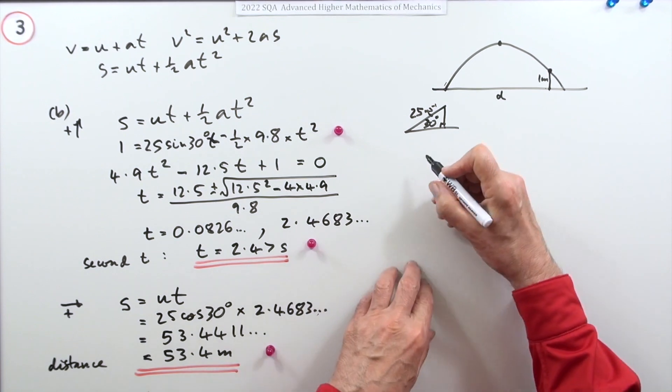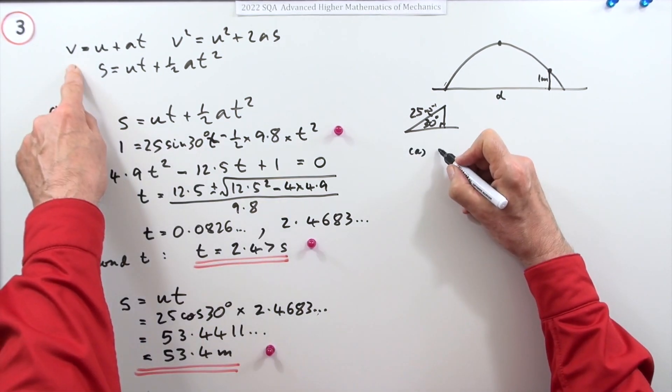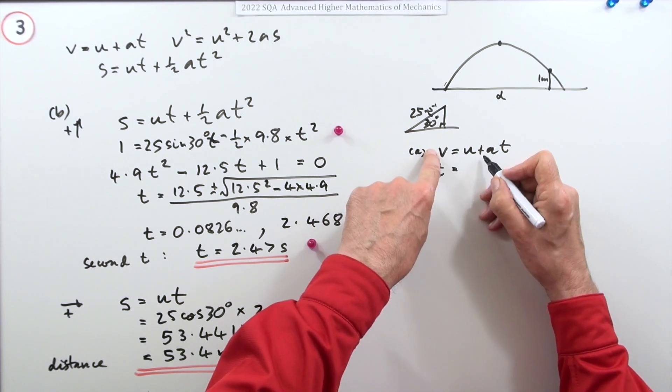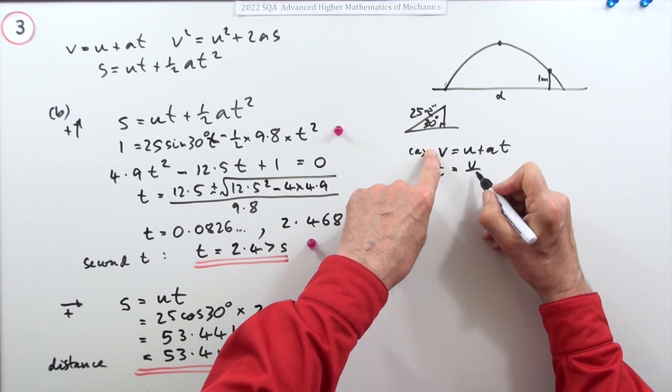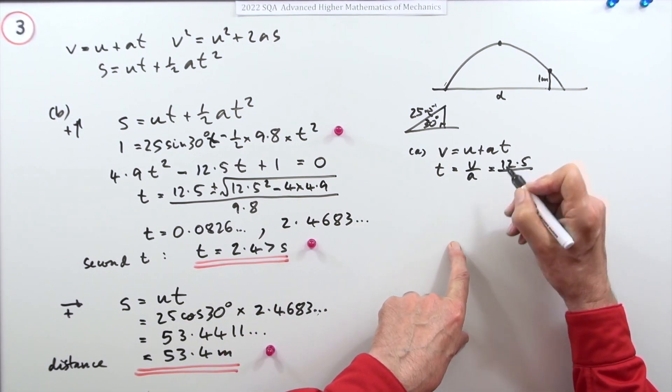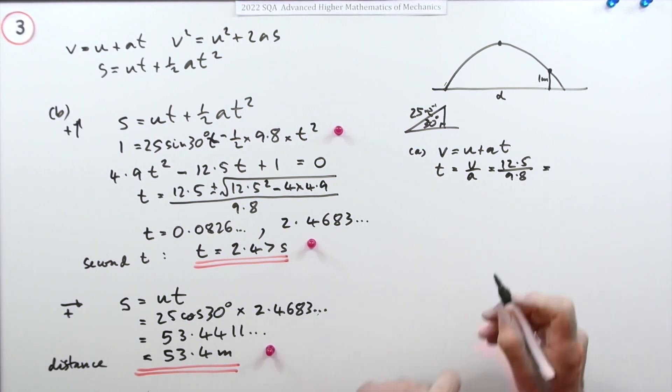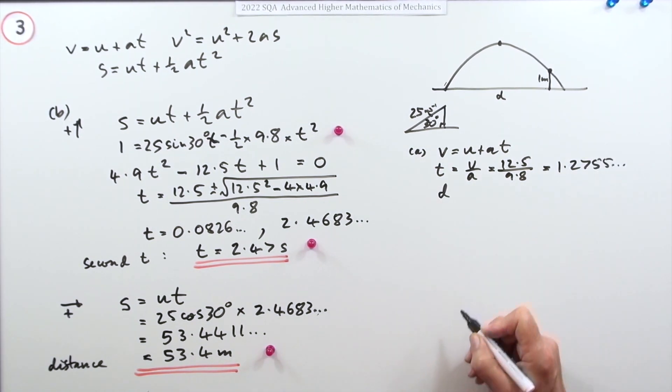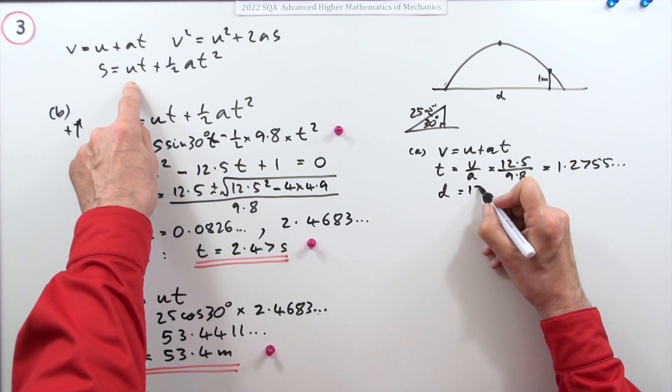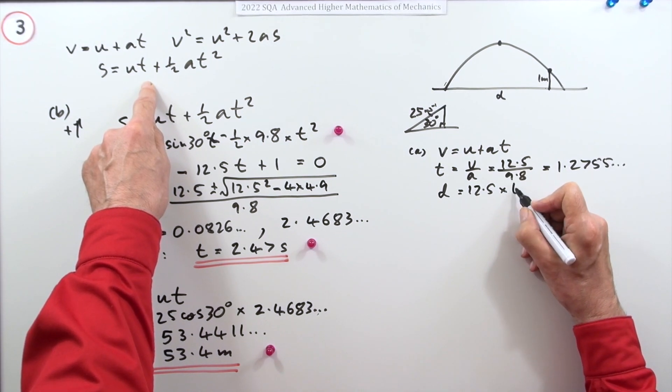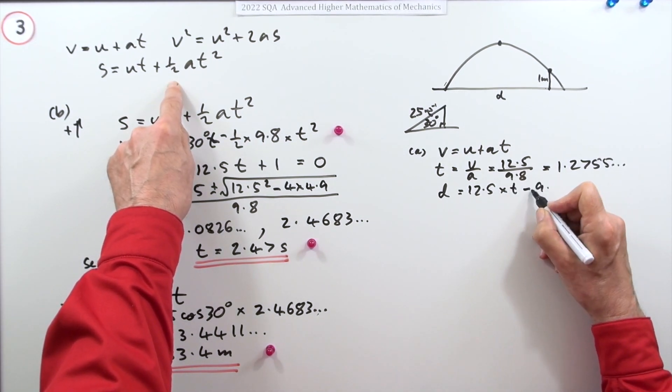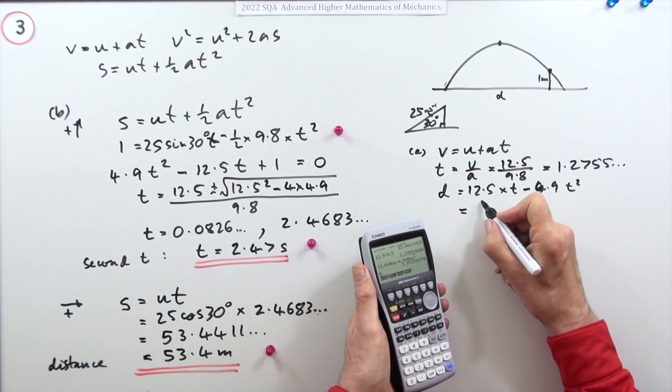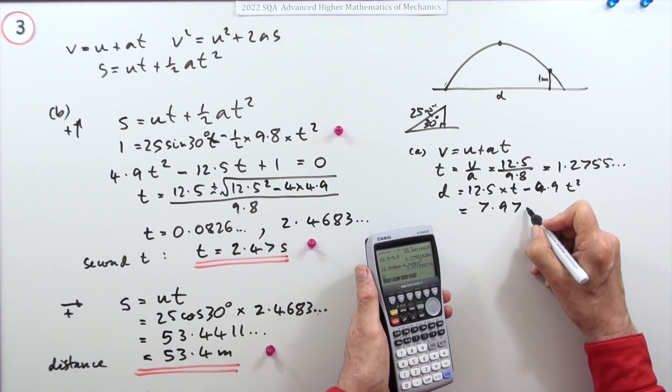Let's give a quick try just to see how bad it might have been. In part a I could have done this: v equals u plus at, so t would have been, v was zero, so t would just have been u upon a, which was the 12.5 divided by 9.8, which is 1.2755. You'd have then got the distance up to the top because the distance would have been that 12.5 times this t minus 4.9 times t squared. You press the button and you get the same answer, 7.9719 and so on.